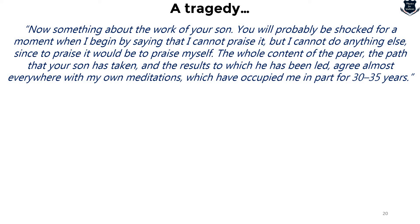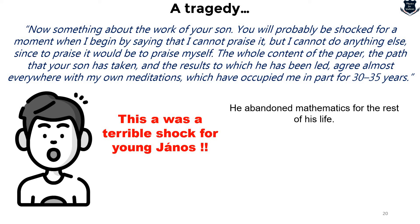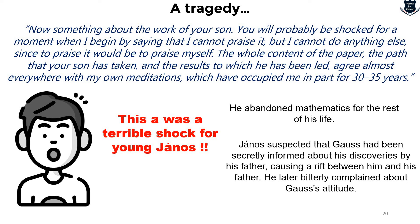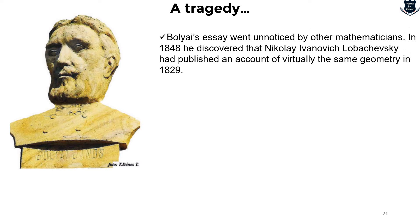That means Gauss was claiming that Bolyai had done nothing new — that he himself had done it 30 to 35 years ago. This was a terrible shock for young János, and he abandoned mathematics for the rest of his life. Later, he criticized his father, suspecting that Gauss had been secretly informed about his discovery, which caused a rift between father and son. He bitterly complained about Gauss's attitude. Bolyai's essay went unnoticed by other mathematicians, and in 1848 he discovered that Lobachevsky had published a virtually identical geometry in 1829.